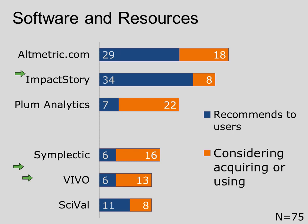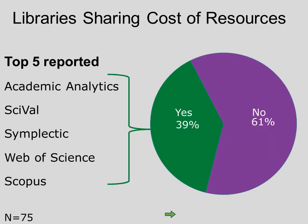Libraries reported a number of other resources and software, both paid and free, for use in scholarly output assessment, and that extensive list begins on page 23 of the SPEC kit. We wanted to know if libraries were sharing the cost of the paid resources with any units in their institution. Only 29 libraries, or 39%, reported that they were sharing costs with another unit. For those sharing costs, the top five resources included Academic Analytics, SciVal, Symplectic, Web of Science, and Scopus — your higher-dollar resources.